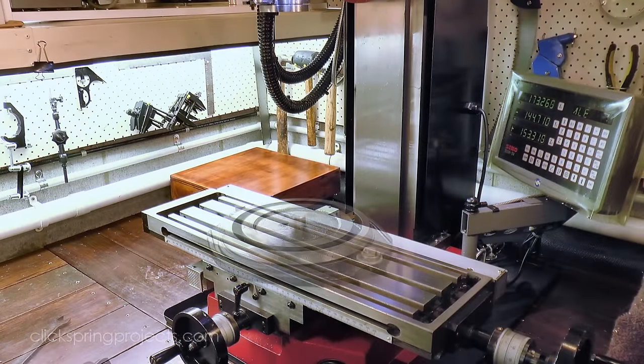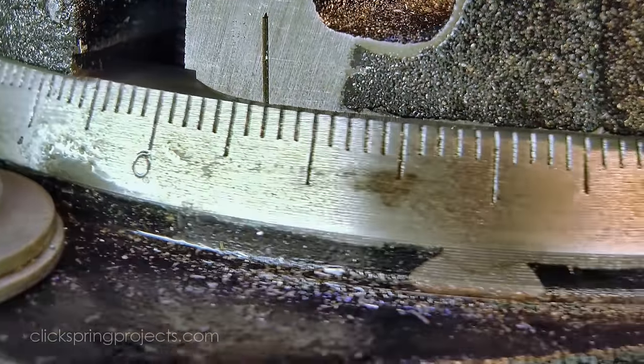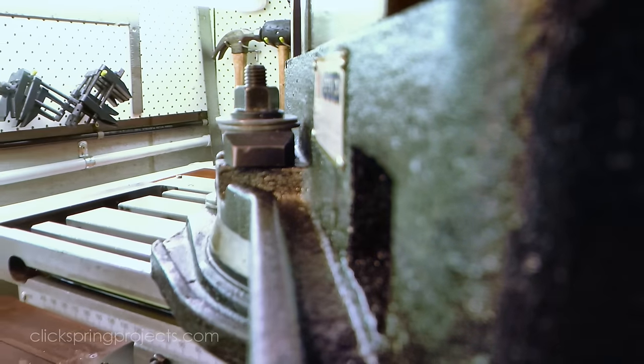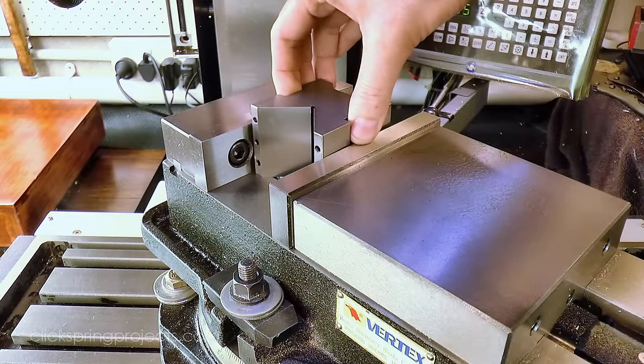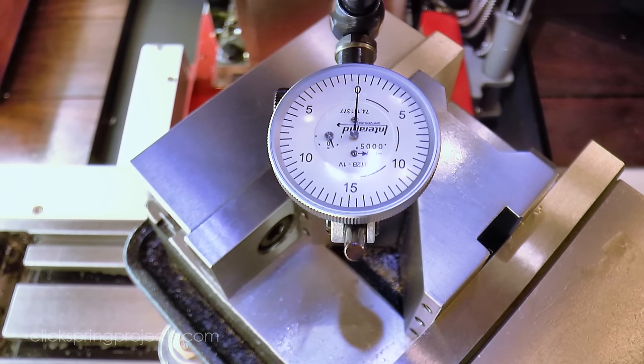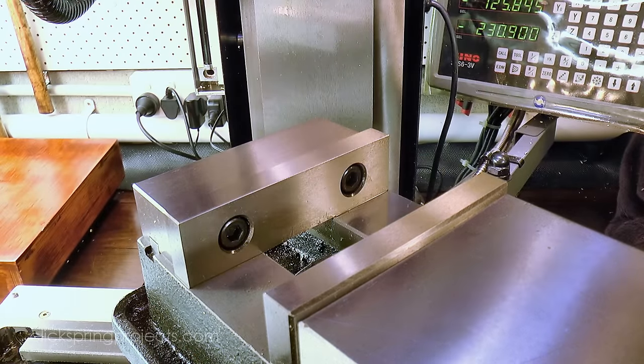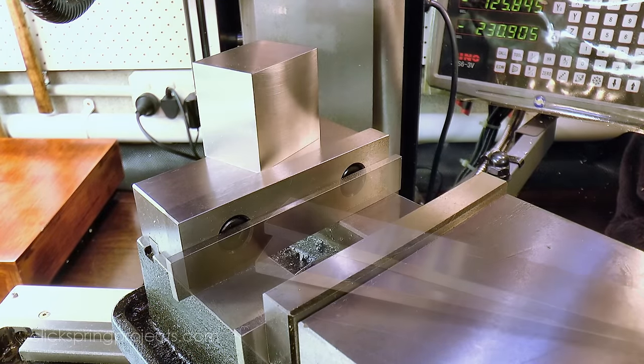One of the key things required for the project to succeed is that the parts be able to fit together well, regardless of how they're oriented when they go back together. For that to occur, it's critical that the initial stock be perfectly square, and that all cuts are made at precisely 45 degrees. So I'm taking time to accurately dial in the vice angle, using a precision ground V block to give me the 45 degree reference.